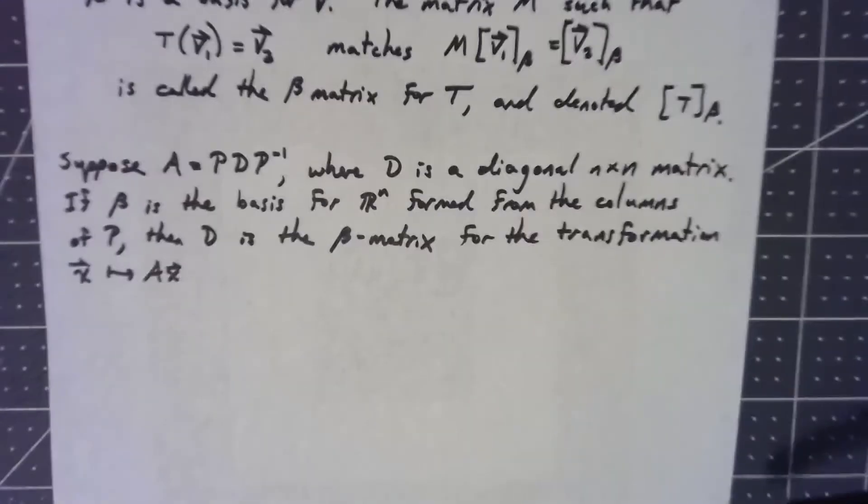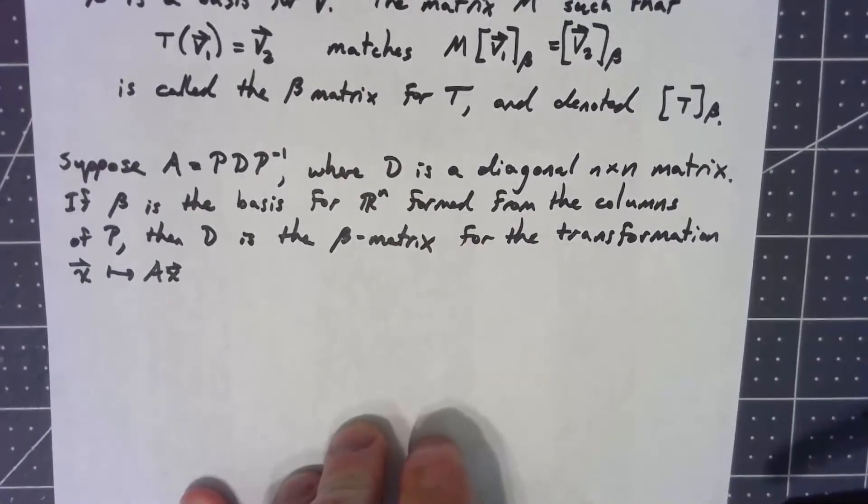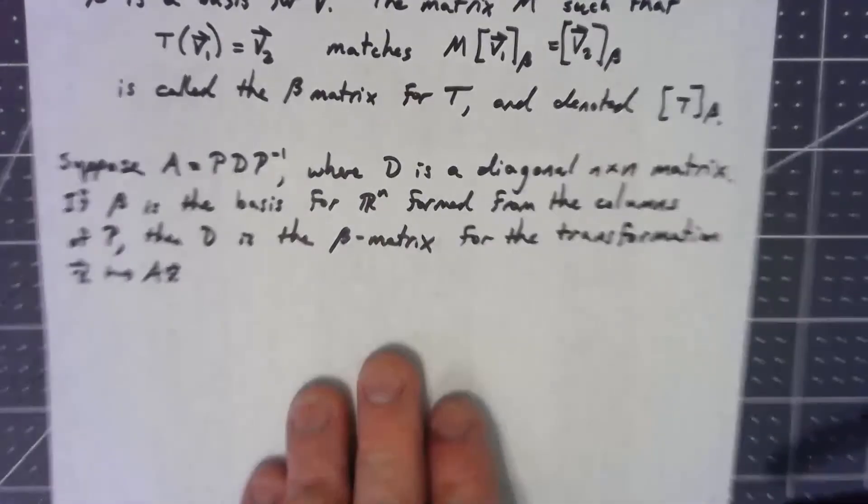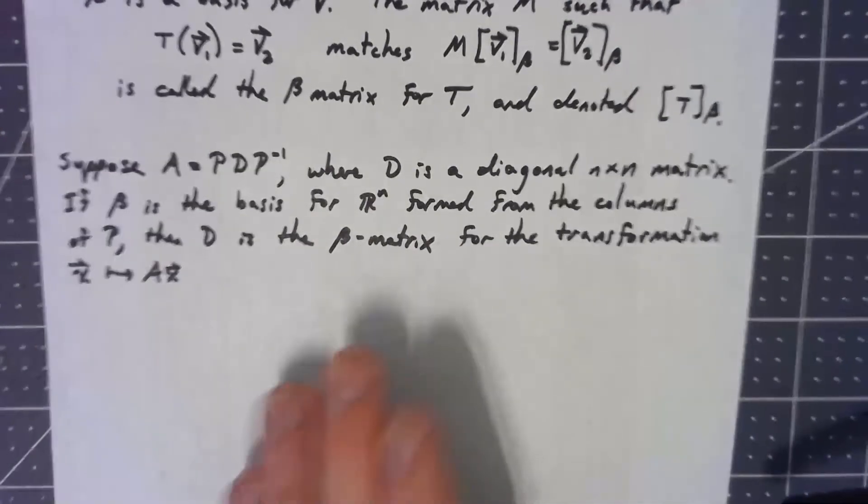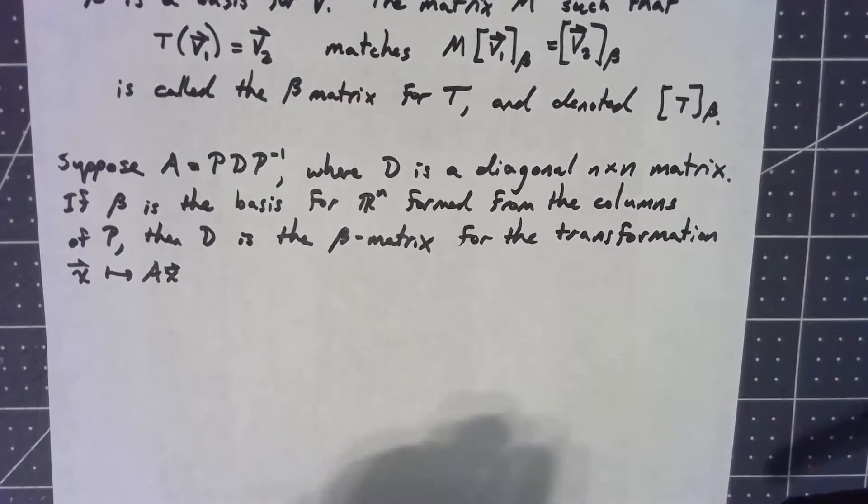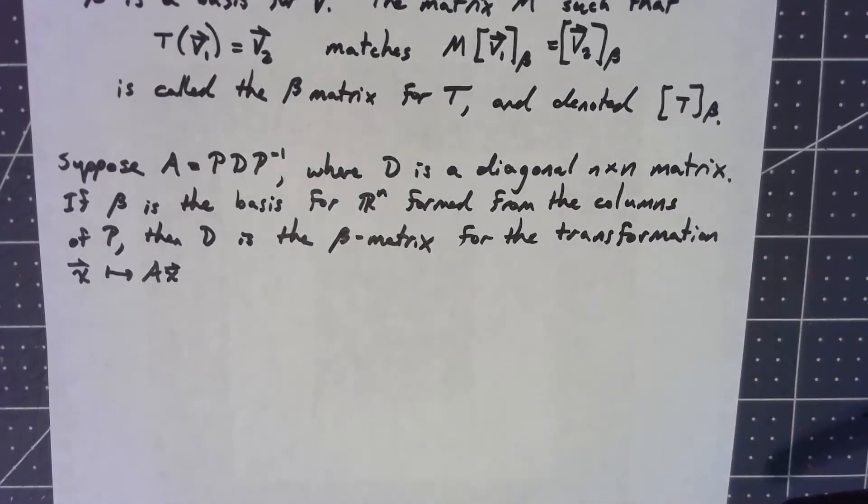Then what this says is that that diagonal matrix that it's similar to is the beta matrix, is the matrix for that linear transformation with respect to that basis for the transformation, which is multiplying by A.